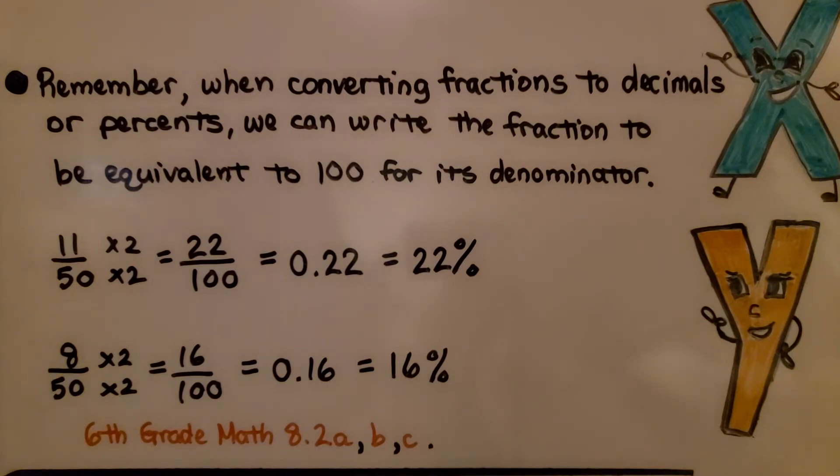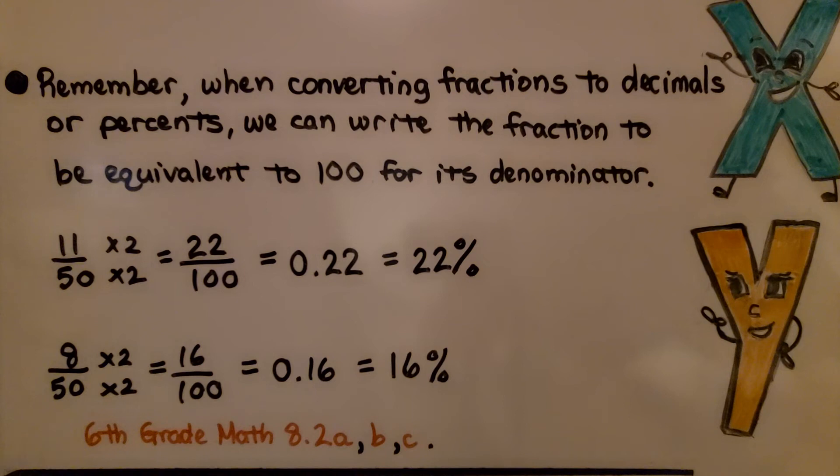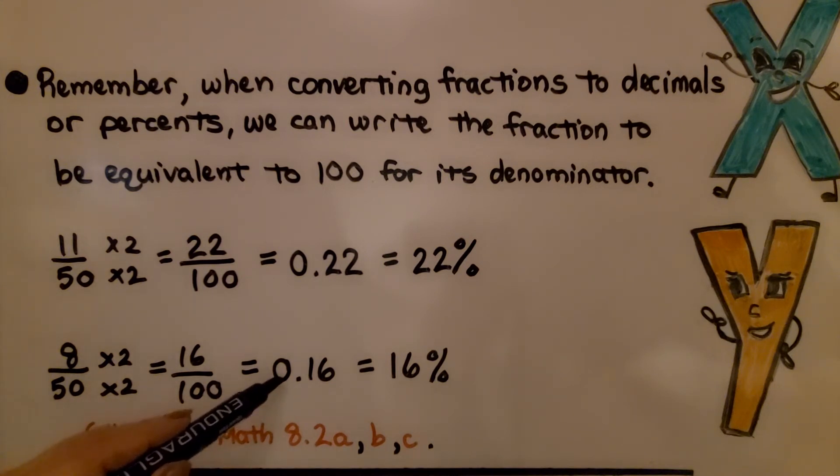Now, you might have to do a lot of converting. Remember, when converting fractions to decimals or percent, we can write the fraction to be equivalent to 100 for its denominator. When we had 11 50ths, the 50 needs to be multiplied by 2 to be 100 for the denominator, and the numerator gets multiplied by the same thing. So we have 22 hundredths, which as a decimal is 0.22 and 22%. For 8 50ths, again, multiply by 2 to get 16 hundredths, which is 16 percent.